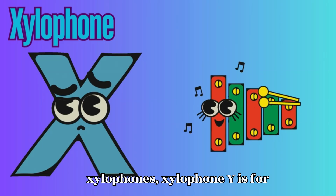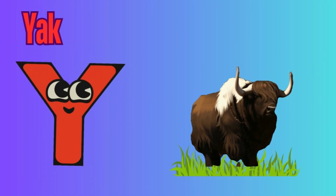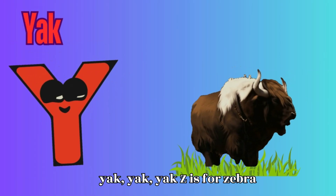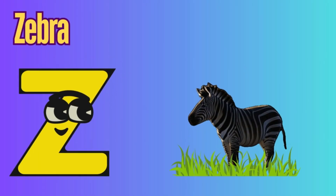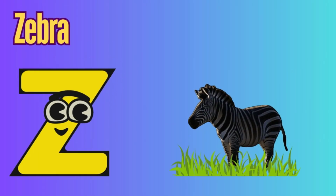X is for Xylophone. X-X-Xylophone. Y is for Yak. Z is for Zebra. Z-Z-Zebra. Now we've learned the alphabet!